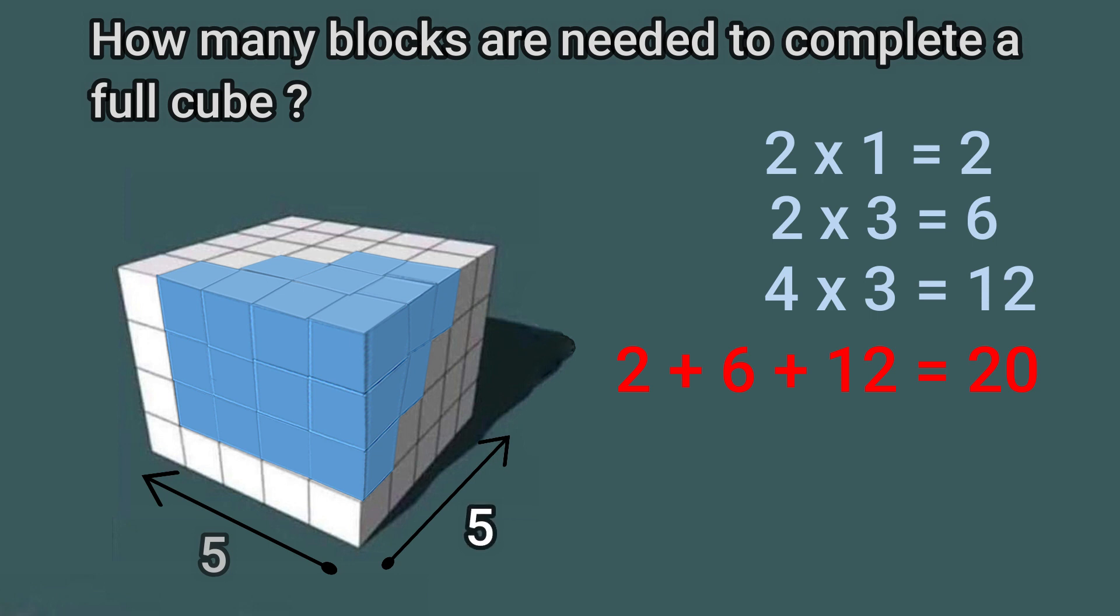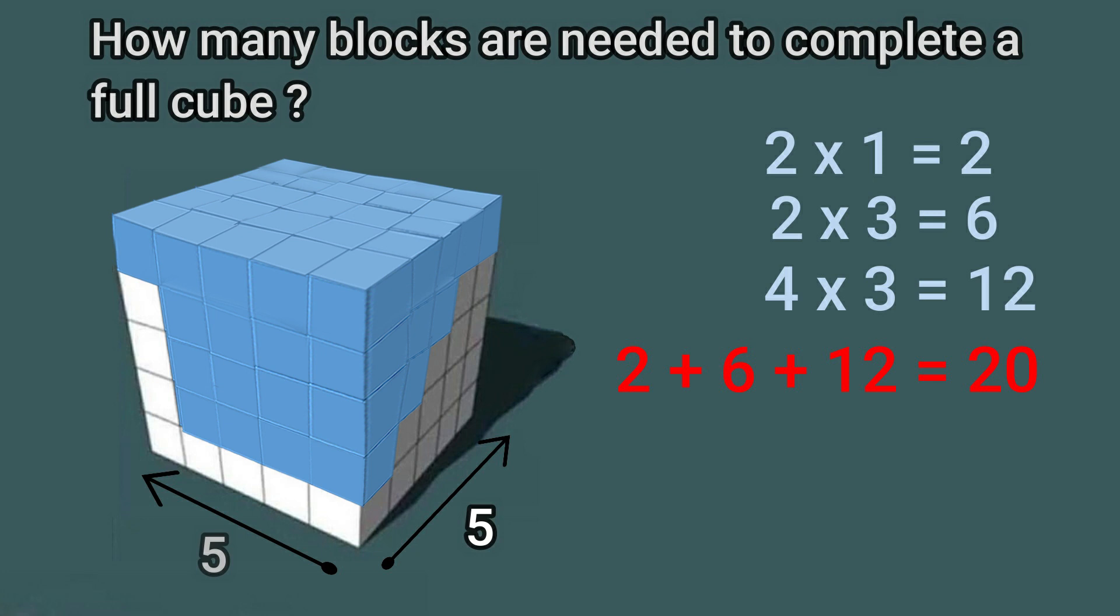But the height is only 4 small cubes. So we must arrange another layer of small blocks to complete the full cube. That is, we must set another 25 blocks on the top.